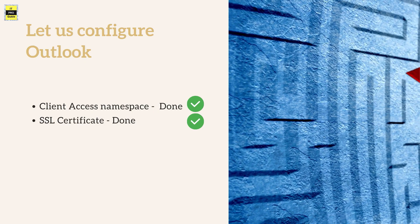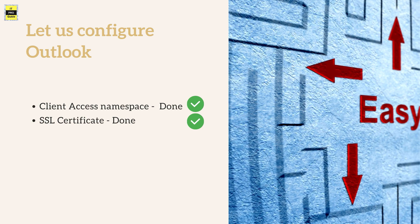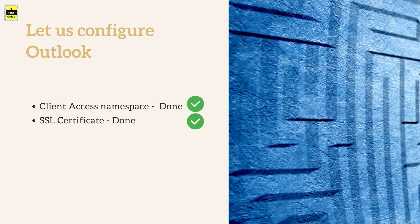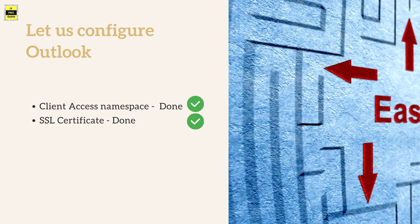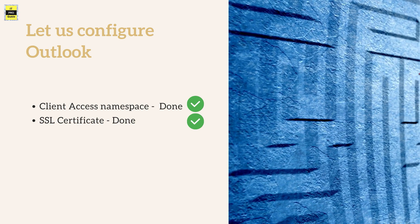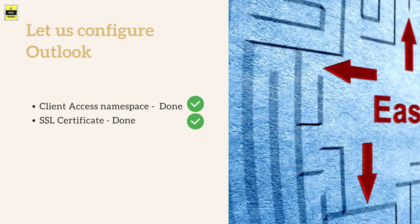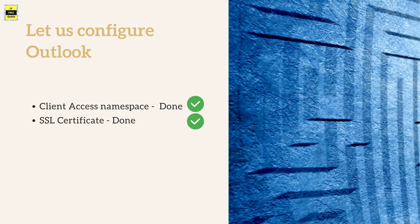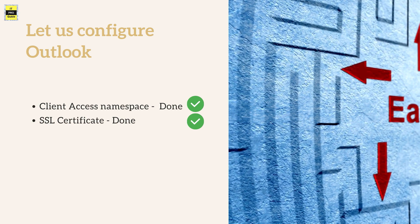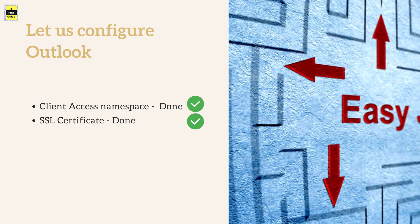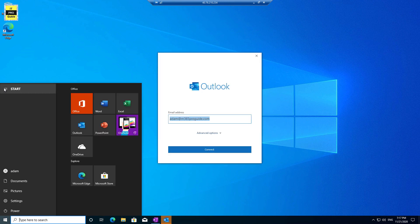Now let us configure our Outlook client with one of the email users created in our Exchange Admin Center. Configuring an Outlook email account is very easy because we followed all the best practices when building our first Exchange server — we completed the certificate requirement and the shared namespace configuration. When you configure Outlook now, you only need to enter your username and password, and Outlook will pull all the required information from Auto Discover and complete the configuration for you. I have a Windows 10 machine with Outlook prepared.